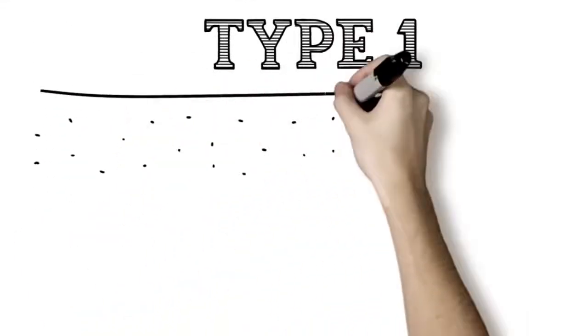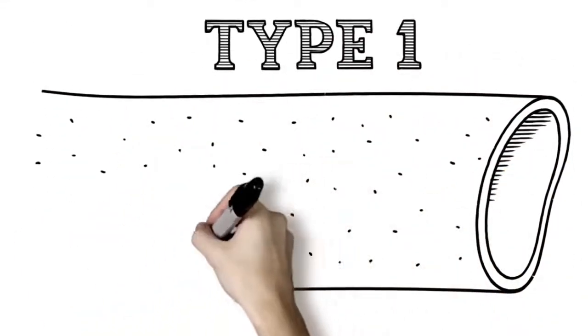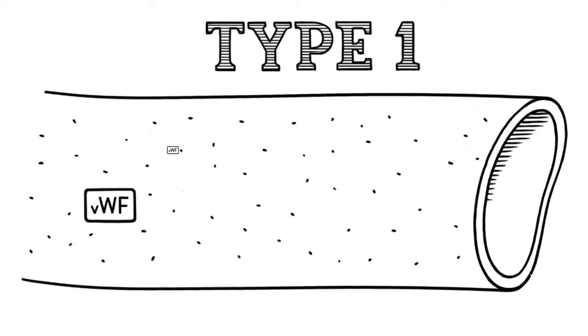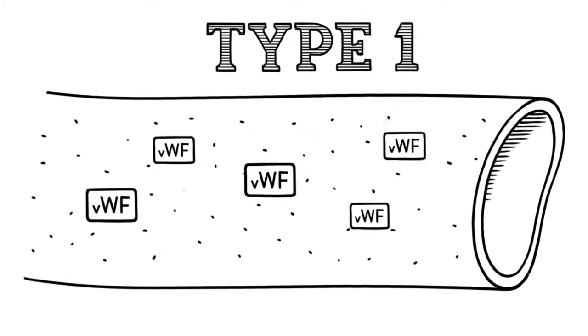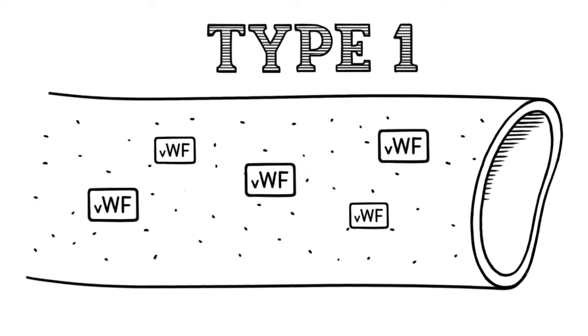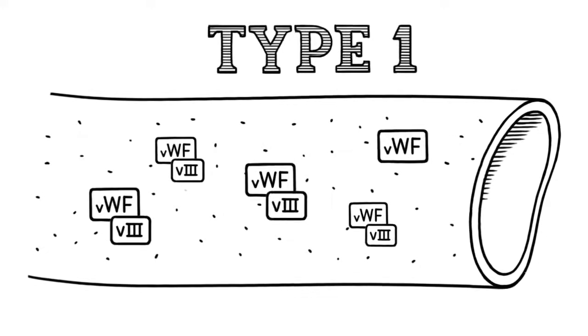There are several different classifications of VWD. In type 1 VWD, the body has lower than normal levels of Von Willebrand factor and potentially low levels of factor VIII, another blood clotting protein.